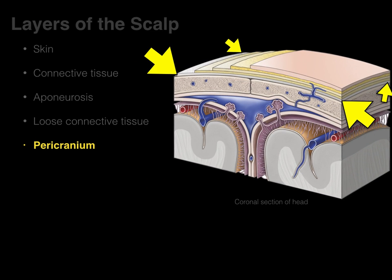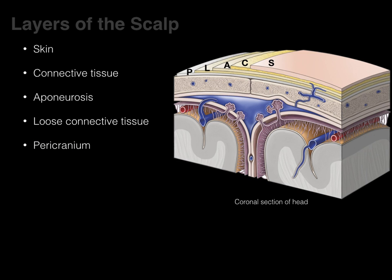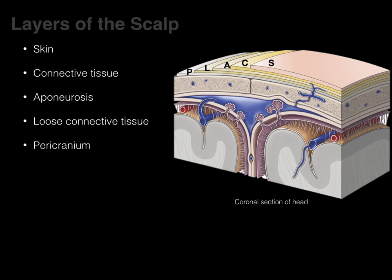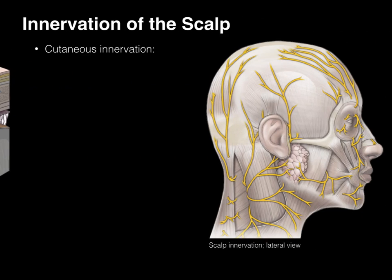The last layer is called the pericranium — this is really the periosteum on the outside of the skull bones, knitted to the bone. And there are the five layers of the scalp, which spell SCALP from superficial to deep.